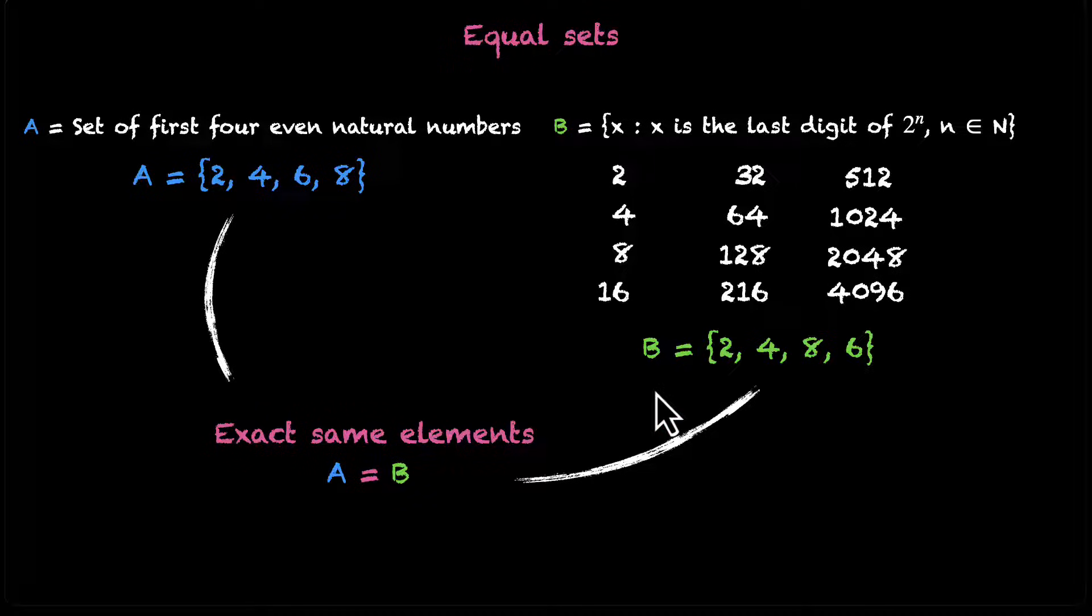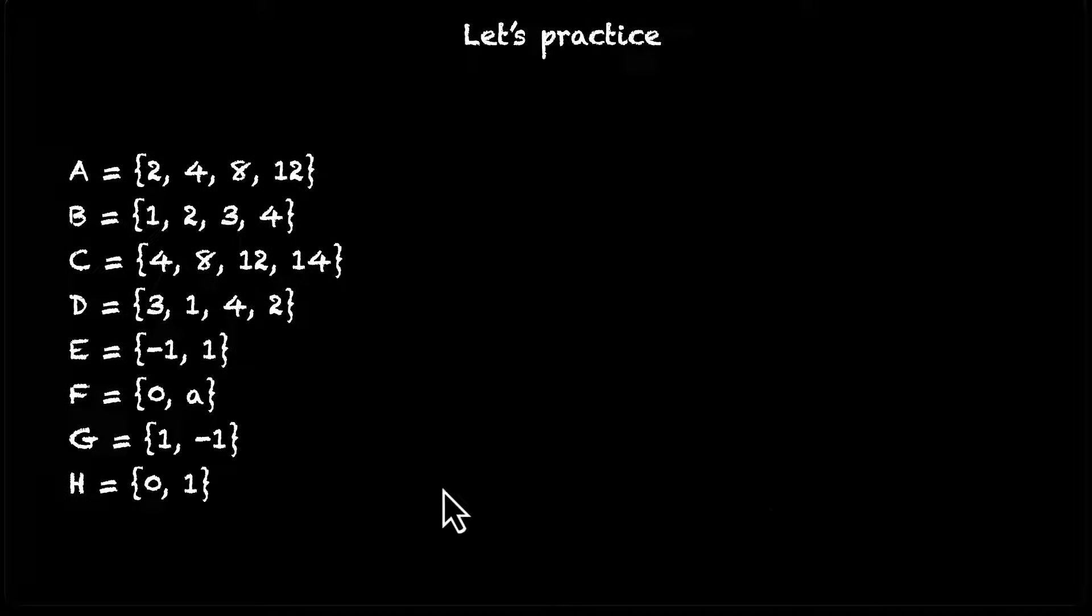Whenever this is not the case, we can say that the sets are not equal to each other. Let's do a few examples. We have this set A, B, C, D, E, F, G, and H. Now pause the video. This won't take you a while. Figure out which sets are equal to each other.